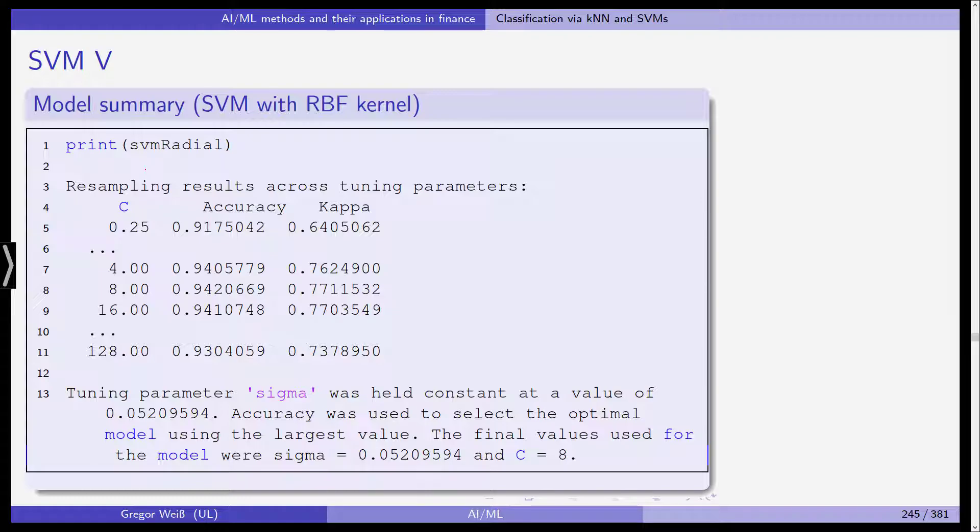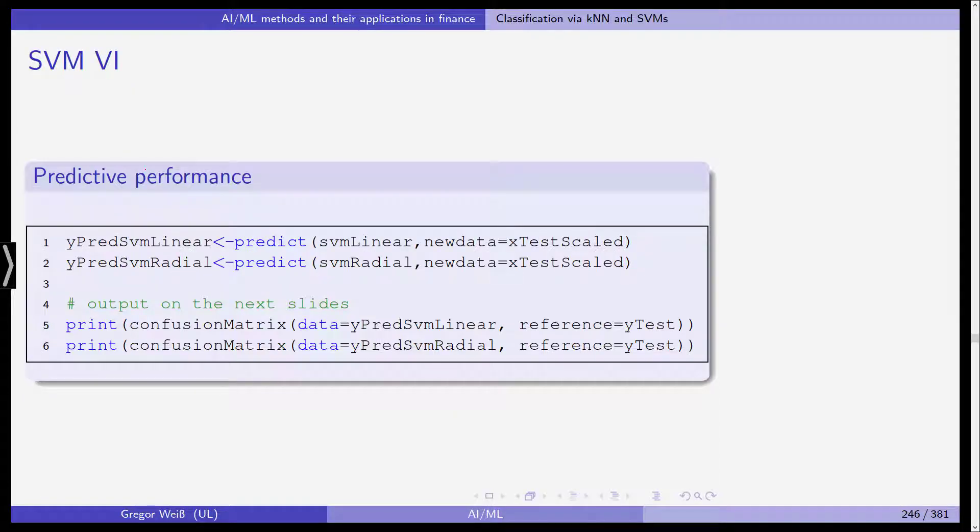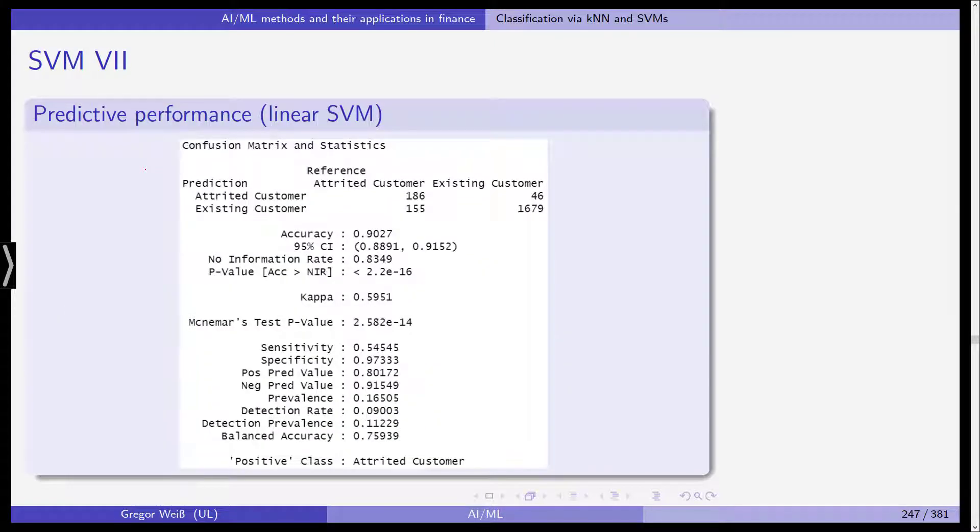So this is what comes out of the training model. We predict the classes for the test scaled data and we do this both for the linear classifier and the radial basis support vector machine. And then we also print the confusion matrix for comparing our predictions with the y test data sample as the reference. So both for the linear support vector machine and the radial basis function kernel.